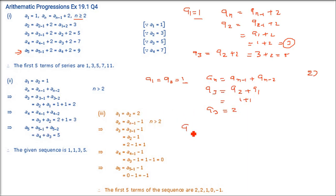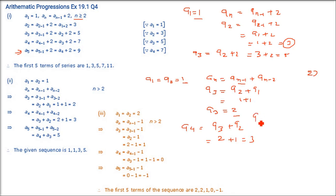a₄ = a₃ + a₂ = 2 + 1 = 3. a₅ = a₄ + a₃ = 3 + 2 = 5. So you get the sequence 1, 1, 2, 3, 5.